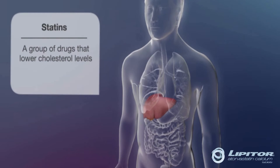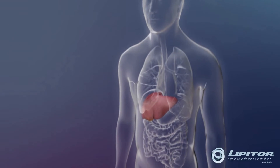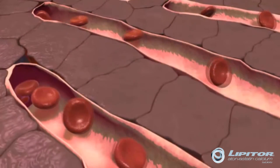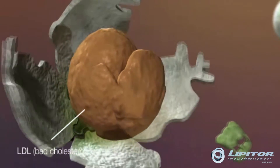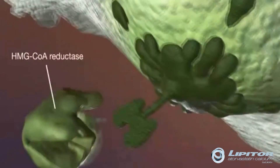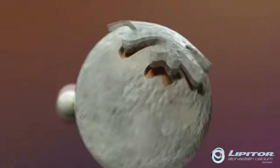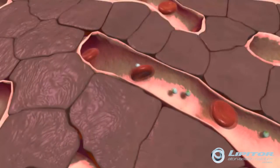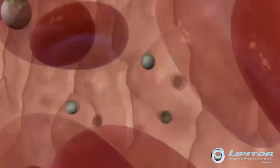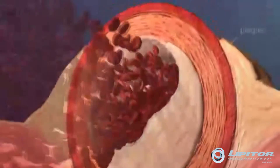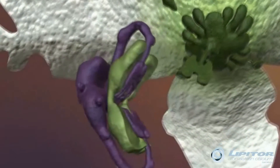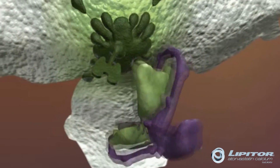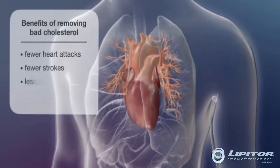Lipitor is part of a group of drugs that lower cholesterol levels. Bad cholesterol, aka low-density lipoproteins, are combinations of fat and proteins produced in the liver by an enzyme called HMG-CoA reductase. Both bad LDL and good HDL are necessary, but LDL forms plaques in the arteries, making it harder for blood to flow through and potentially causing blockages. Lipitor works by binding to HMG-CoA reductase, changing the shape of the active site, so the enzyme cannot create more LDL. Lower LDL levels mean less risk of heart attack and stroke because there is less plaque buildup.